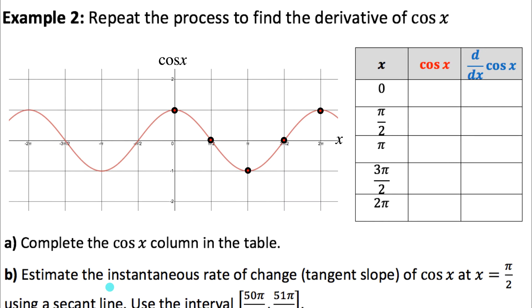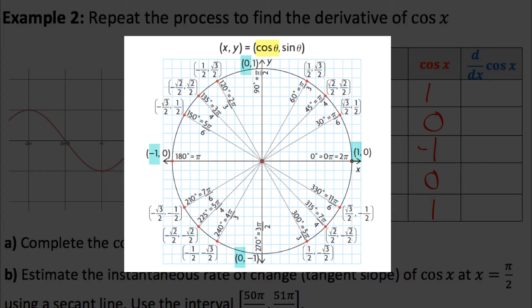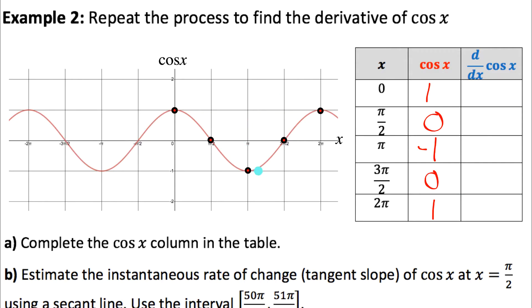Let's do the same thing to find the derivative of cosine x. Here's the graph of cos x. Let's write down the values: cosine of zero is one, cosine of pi over two is zero, cosine of pi is negative one, cosine of three pi over two is zero, and cosine of two pi is one. We could get those from the graph or from the x coordinate of where a terminal arm intersects a unit circle. Now we need to figure out the value of the derivative — the slope — at all five of those points.